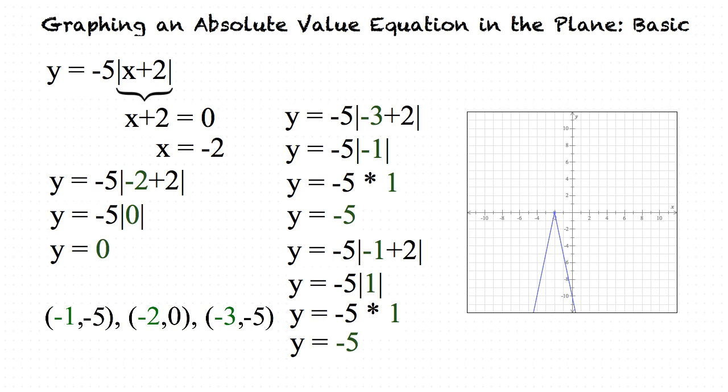I think I got it, but just to be sure: we begin by finding the vertex of our graph by setting what's in between the absolute value symbols equal to 0 and solving for x. Then we pick two values of x, one to the right and one to the left of our vertex, and find the y values of all three points by substituting them into our original equation. Finally, we can graph the equation.